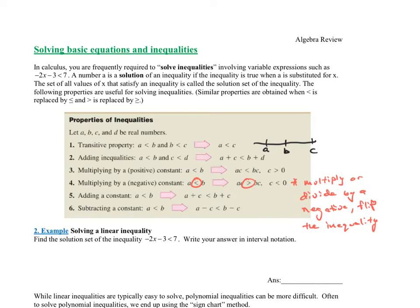Solving inequalities is the exact same thing as solving equations. You can add or subtract whatever you want to both sides as long as it's the same. You can multiply or divide anything on both sides as long as it's the same. There is one exception: you cannot divide or multiply by zero — that makes it undefined. So never multiply or divide by zero, but other than that you're good. Just be careful: if you multiply or divide by a negative, you have to flip that inequality.